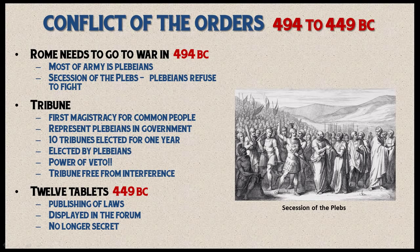The plebeians essentially said they wouldn't go to war until the patricians gave them some rights — otherwise the patricians could fight the war themselves. The patricians didn't have the numbers to do that, so they came to a very difficult decision and created the office of the Tribune. This was a major event because the tribune would represent only the plebeians in the Roman government. Ten tribunes would be elected each year.